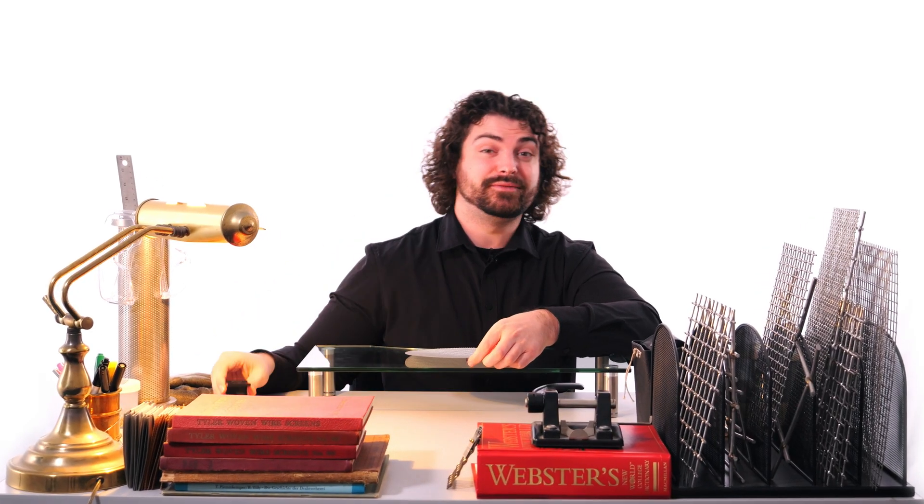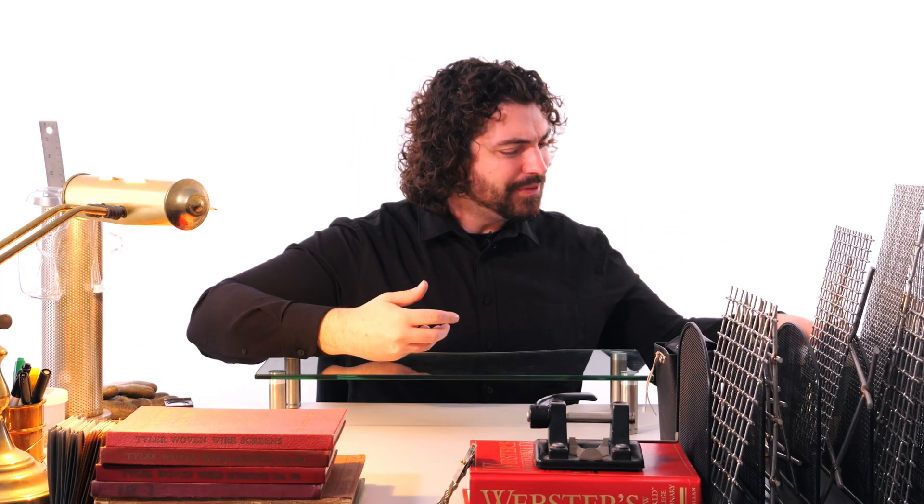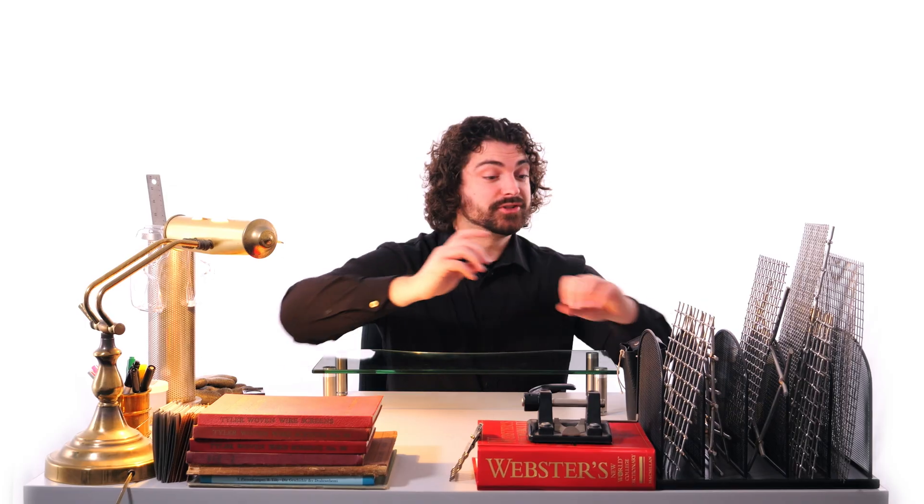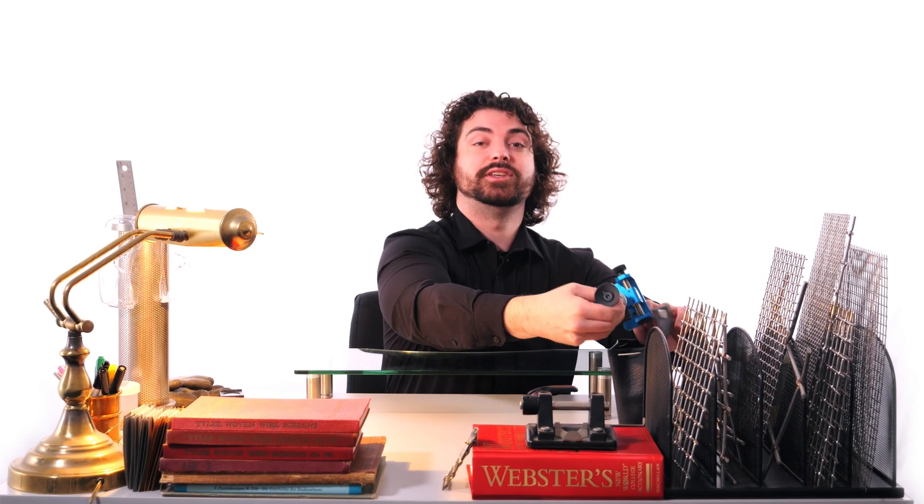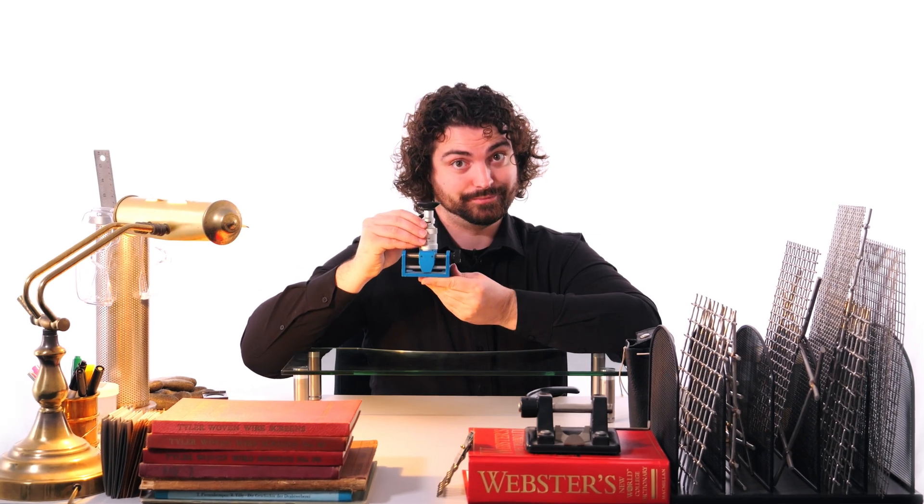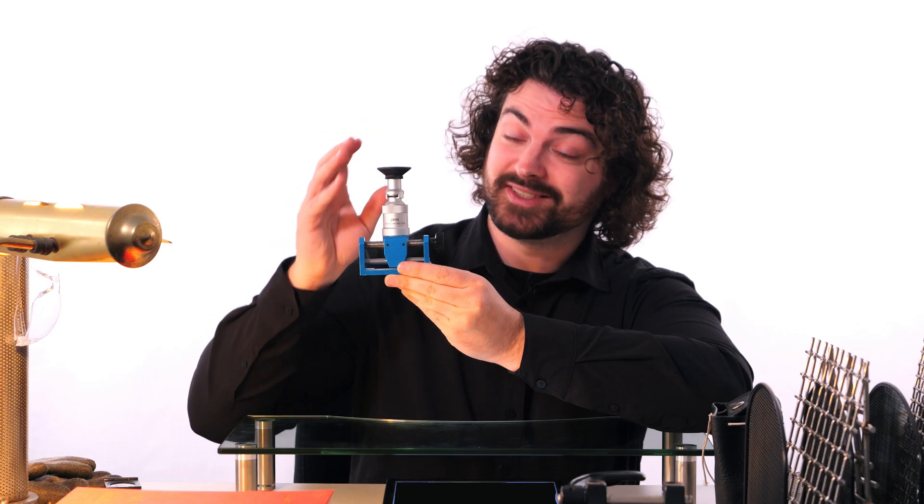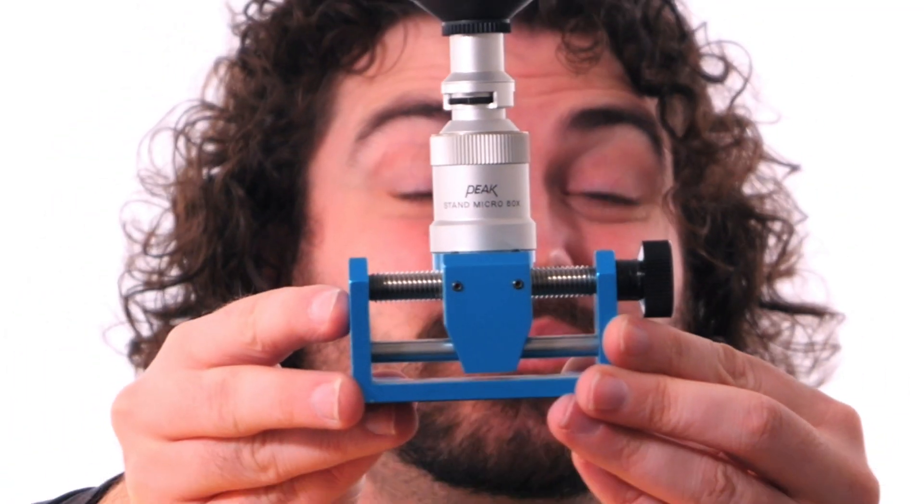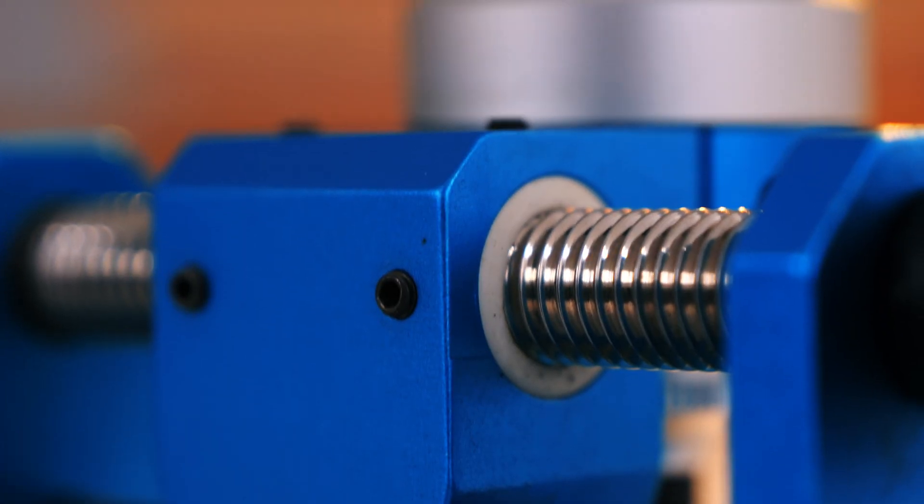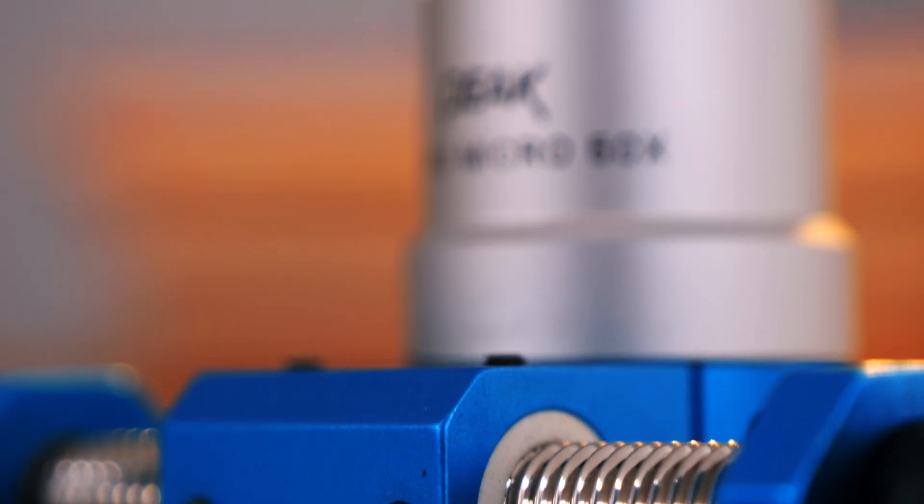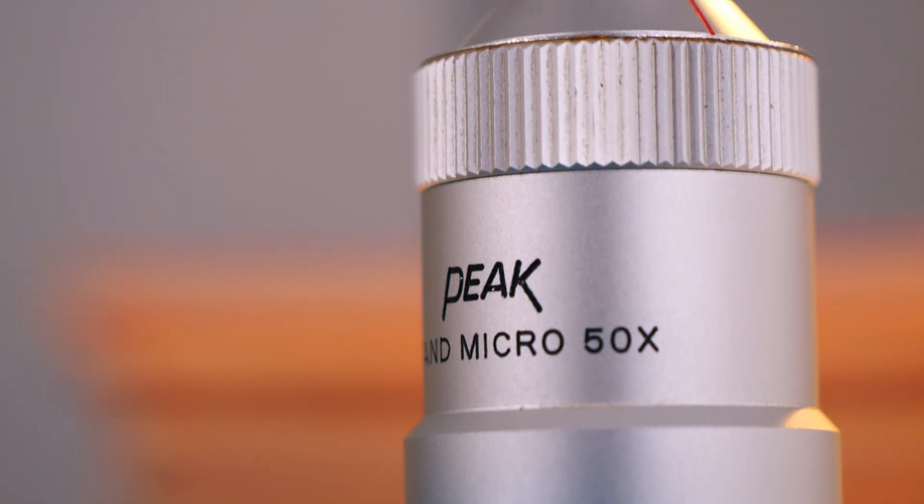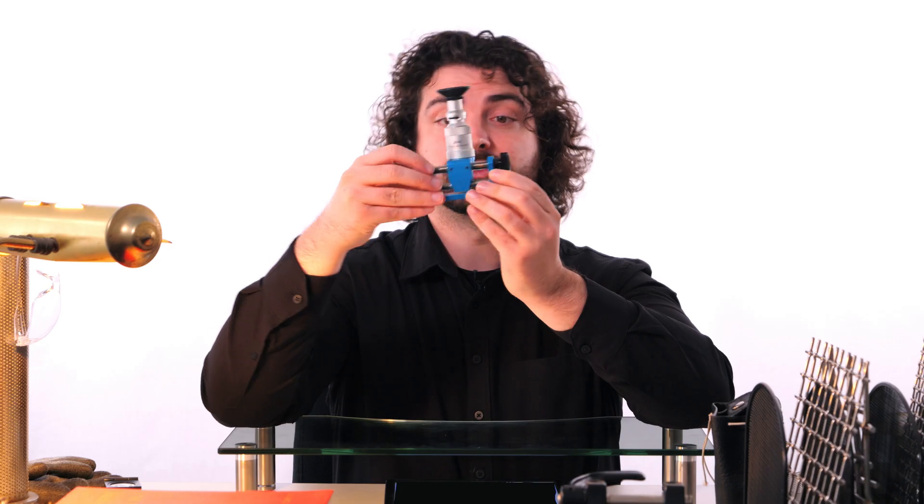So when you get into 20, 30, and 50 mesh, somewhere around there, the counting glass and more specifically your eyes are not going to be as accurate. So if that's ever the case, then you'll definitely want to use a mesh counter. This is a very, very precise piece of equipment and is specific to this industry. This will do a 50 times magnification, which means it's literally a microscope at that point. Which means you can pretty comfortably count a 300 mesh, but anything after that, it's basically down to the person and how good their eyes are.